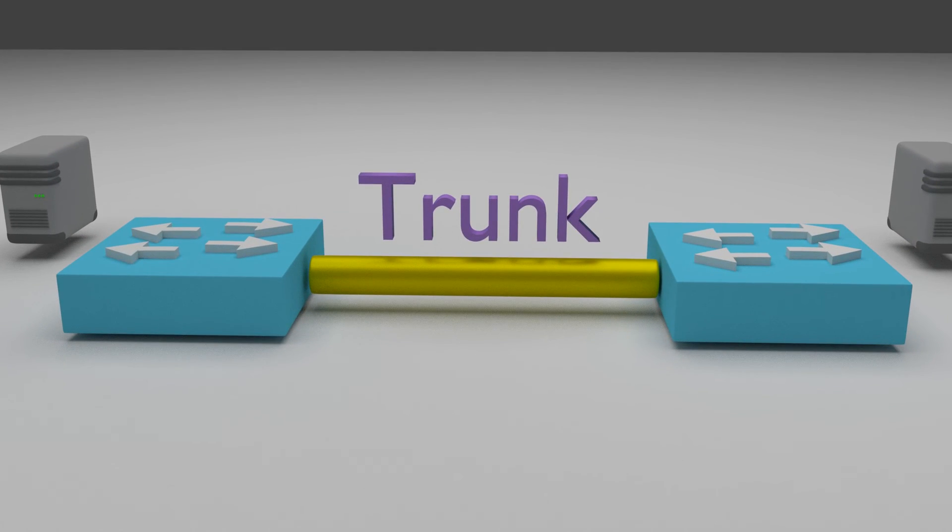Option number one is to configure a promiscuous private VLAN trunk. Assume that our private VLAN aware switch is on the right and the regular switch is on the left. When traffic from a secondary VLAN passes over the trunk the VLAN ID in the frame is rewritten to be the primary VLAN. So from the non-PVLAN switches perspective traffic from a secondary VLAN looks like it's in the primary VLAN.